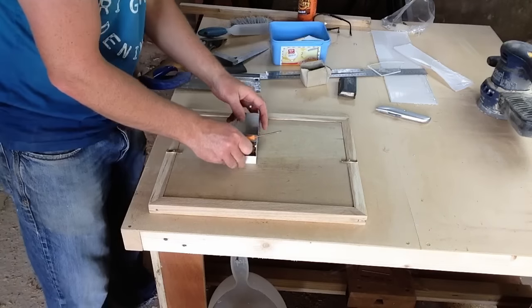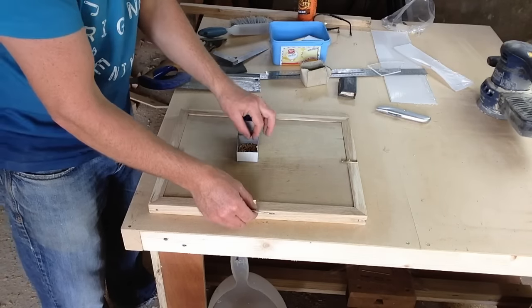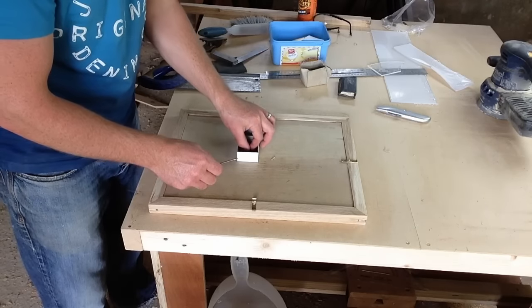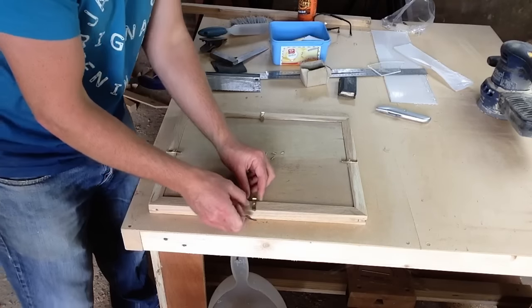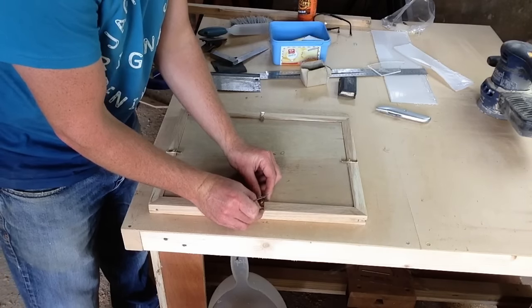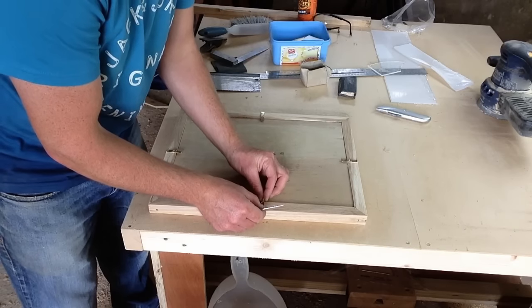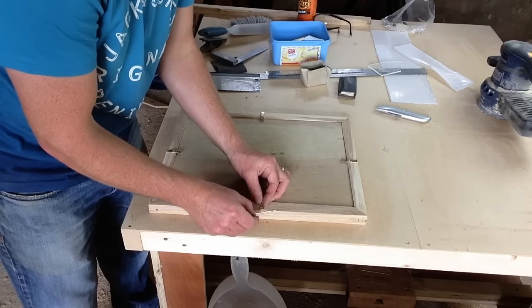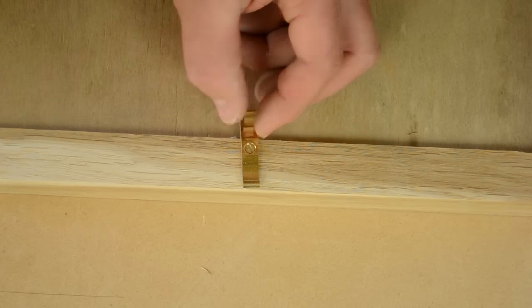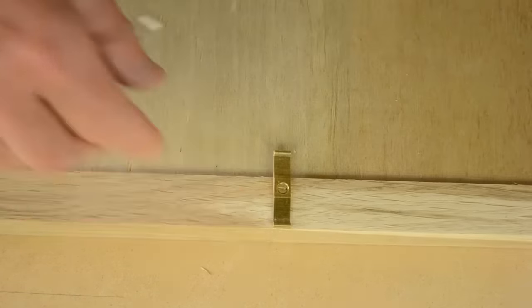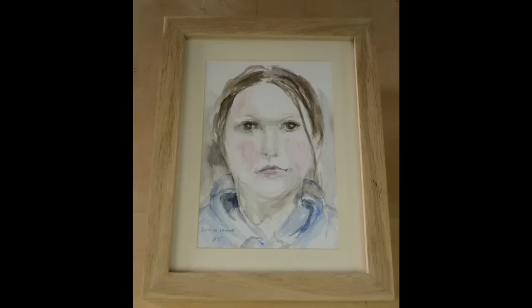And then I got some little brass clips to hold the backing board on, and one, two, three, four, tiny, tiny little screws, which actually proved to be a bit of a pain in the neck, but they look really nice. It's just little brass cleats like that, clips or whatever you call them. And there you have it, one finished oak picture frame.